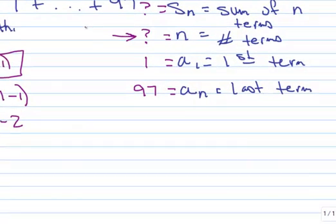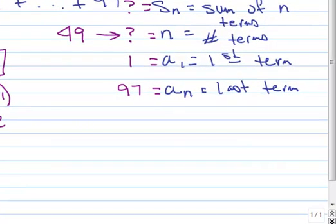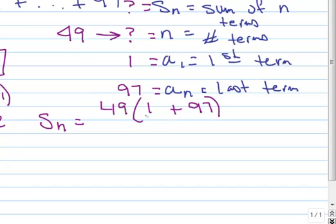Now that I know n is 49, now I can go ahead and find the sum. So S sub n equals, well, n, that's 49, times the quantity 1 plus a sub n is 97. That's the last term. All divided by 2.